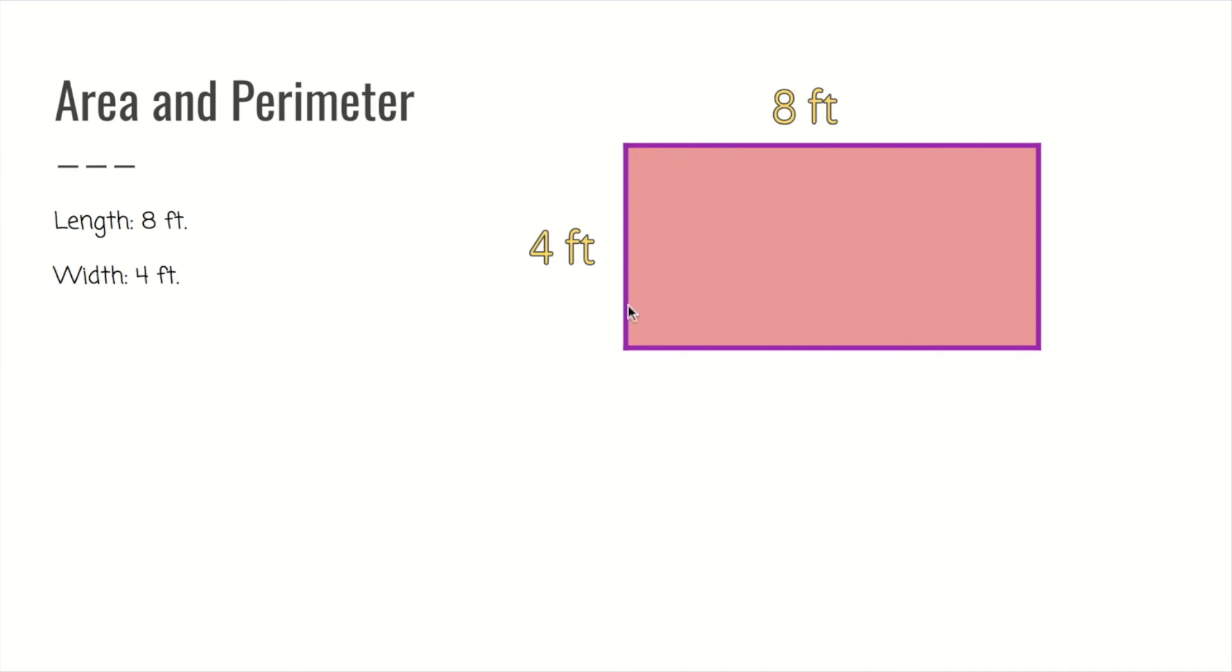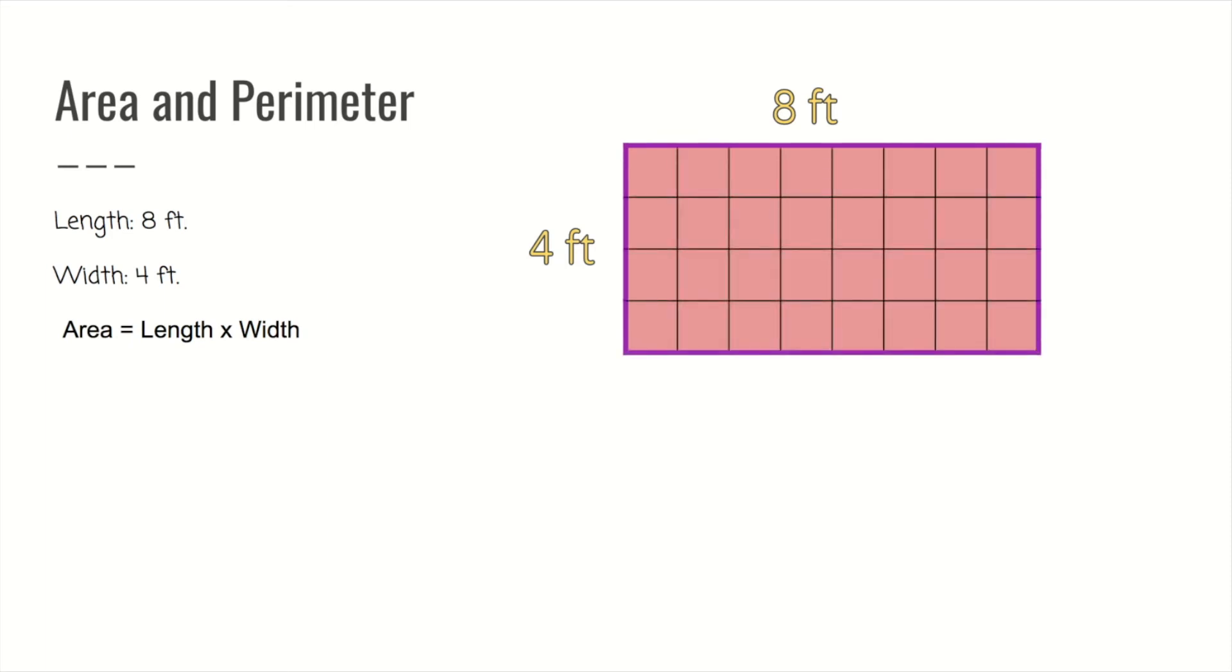We got a length of 8 feet and a width of 4 feet. So we know area. Well, I don't need the lines. I know area's length times width. But just in case you wonder, that's what the lines would look like. It's gone.